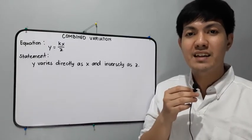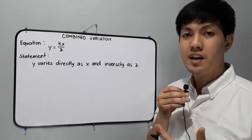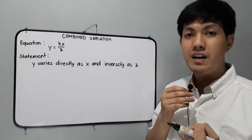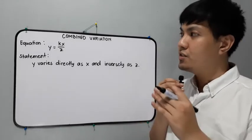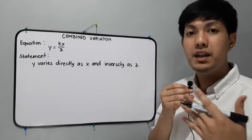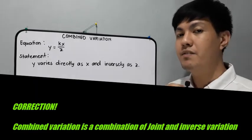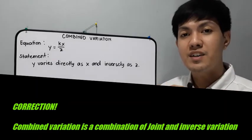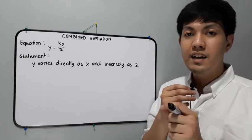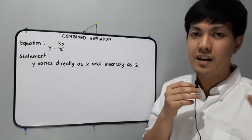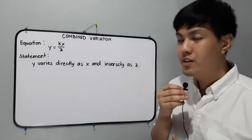Hi, good day, welcome to our math class. Today's topic is about combined variation, and this is the last kind of variation. Let's have a short recap about the kinds of variation: we have direct variation, inverse variation, joint variation, and the last one will be combined variation. It is called combined variation because it is a combination of direct and inverse variation, or a combination of joint and inverse variation.